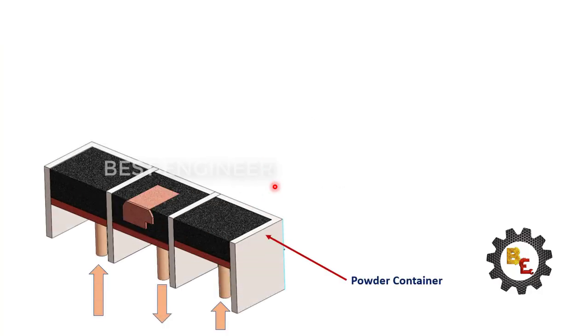Now, let us see important components which construct this SLS technology. The main first component is powder container. In the powder container, there will be three compartments. Compartment 1 and 3 will be completely filled with the raw material - it may be polyamide or nylon.